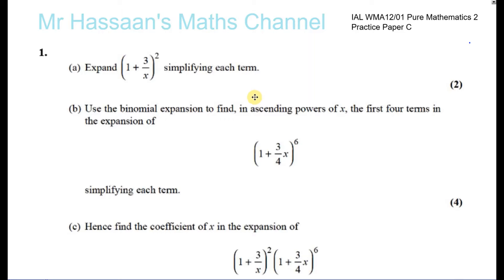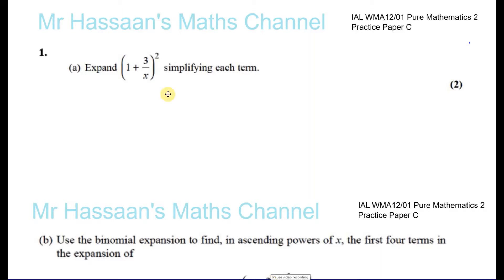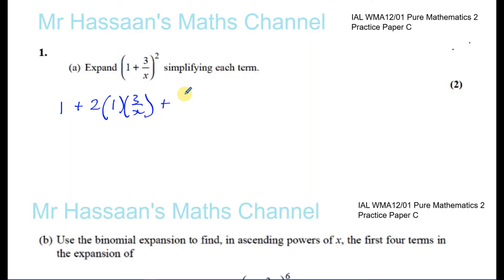In this question we are asked to expand (1 + 3/x)² simplifying each term. We want to expand this bracket. One way is using the pattern: square the first term to get 1², then 2 times the first term times the second term gives 6/x, then square the last term to get 9/x². So we get 1 + 6/x + 9/x².